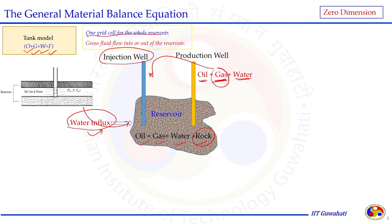If gas produced at the surface is re-injected into the reservoir for pressure maintenance, an injection well is needed. This situation mostly arises in the secondary recovery process. Let us consider all possibilities in the reservoir domain to develop the general material balance equation.